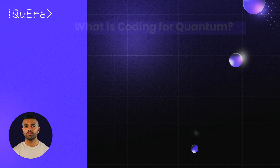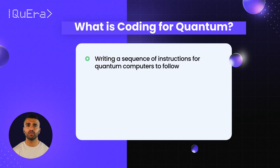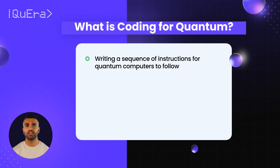Synonymous with computer programming, coding is the process of using programming languages to write sequences of specific instructions for computers to follow. In the context of quantum computing, coding involves programming quantum computers, which operate on fundamentally different principles than classical machines.